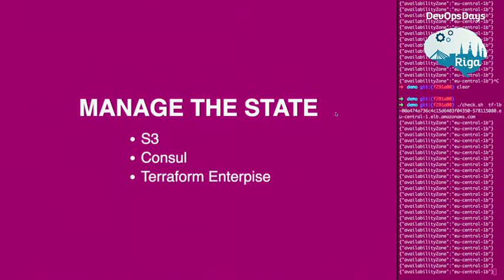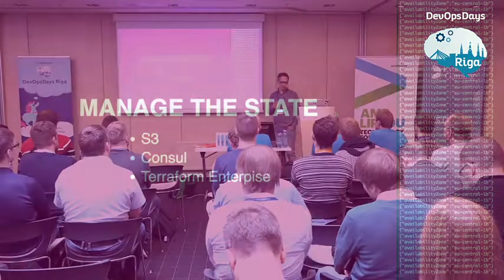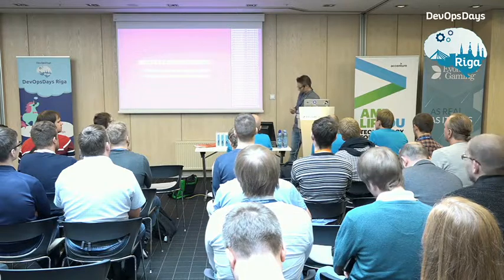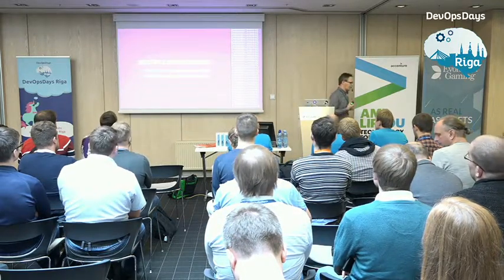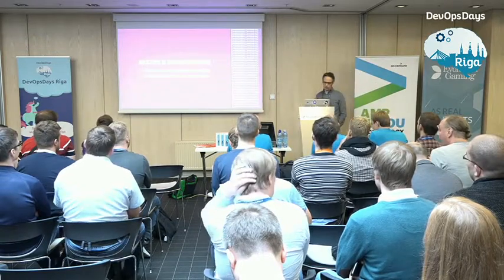Terraform heavily uses a state file. By default that state file is local, which doesn't work for a team. Terraform has built-in support to manage state in a backend — you can use S3, Consul, or Terraform Enterprise. It's important to keep state centrally so everyone on the team shares the same state. It supports out-of-the-box locking when sharing state, avoiding two people making changes simultaneously. We typically manage multiple environments — dev, staging, live — sometimes across different regions and different Amazon accounts. We handle this with abstraction and environment parameters, using the same code for different environments. Modules work very well here again.